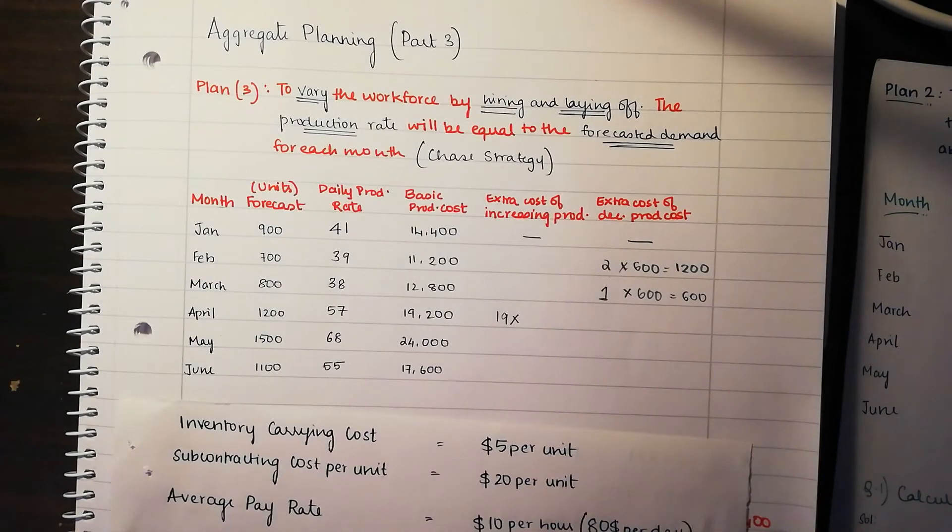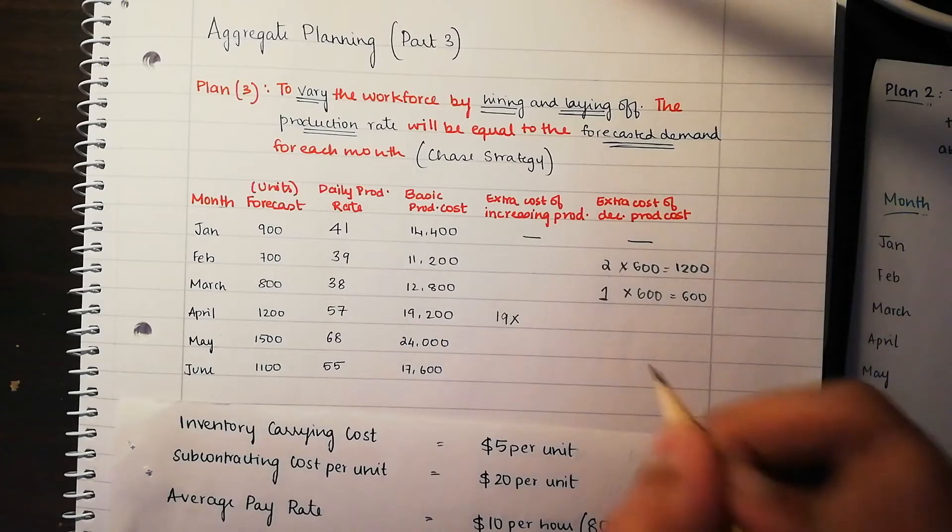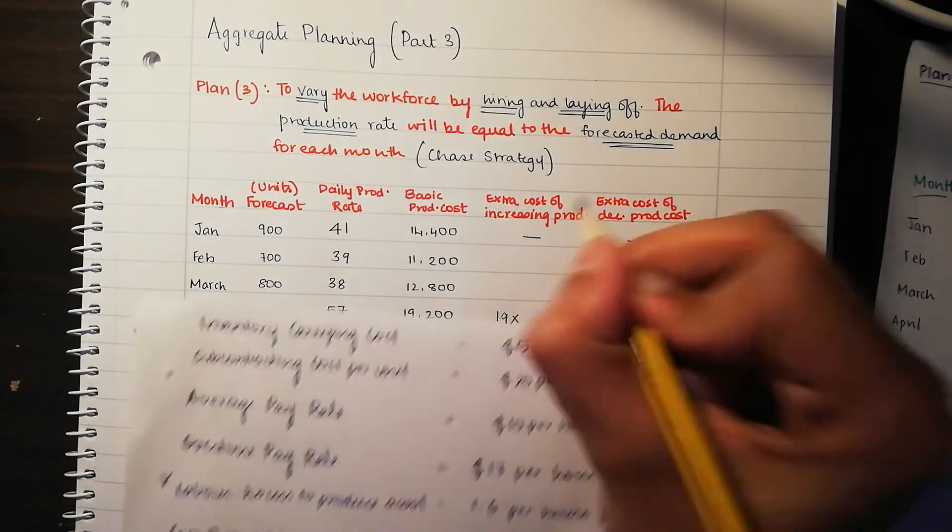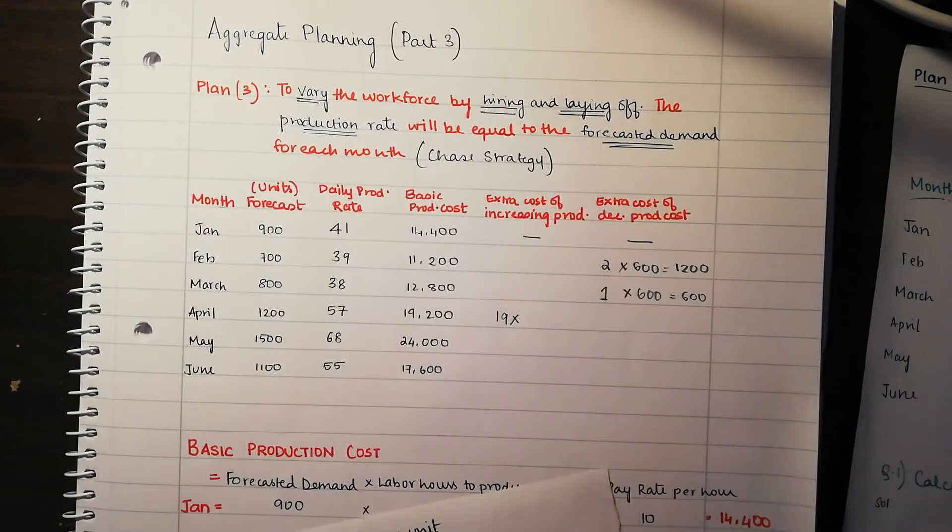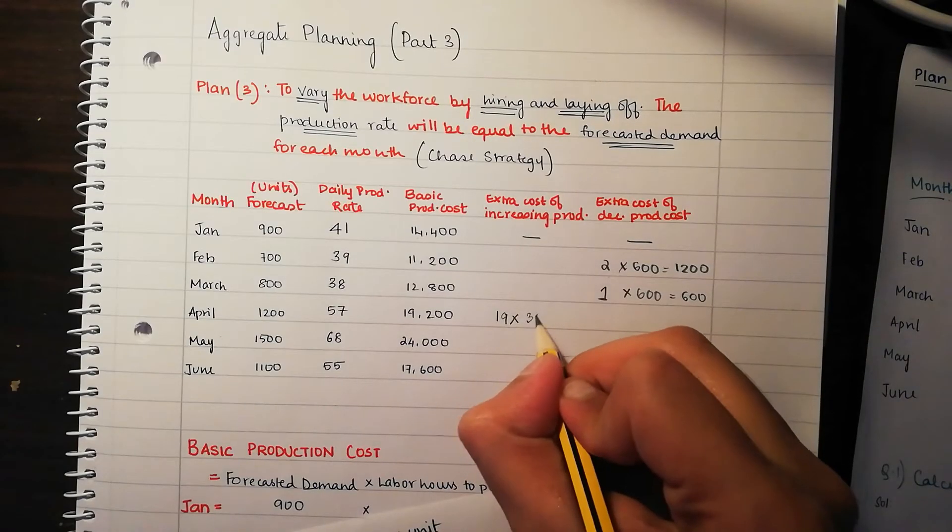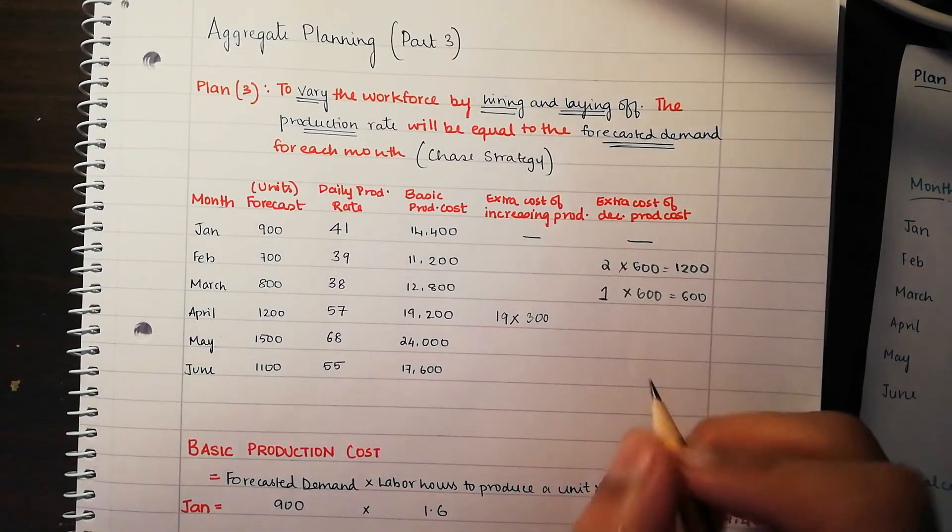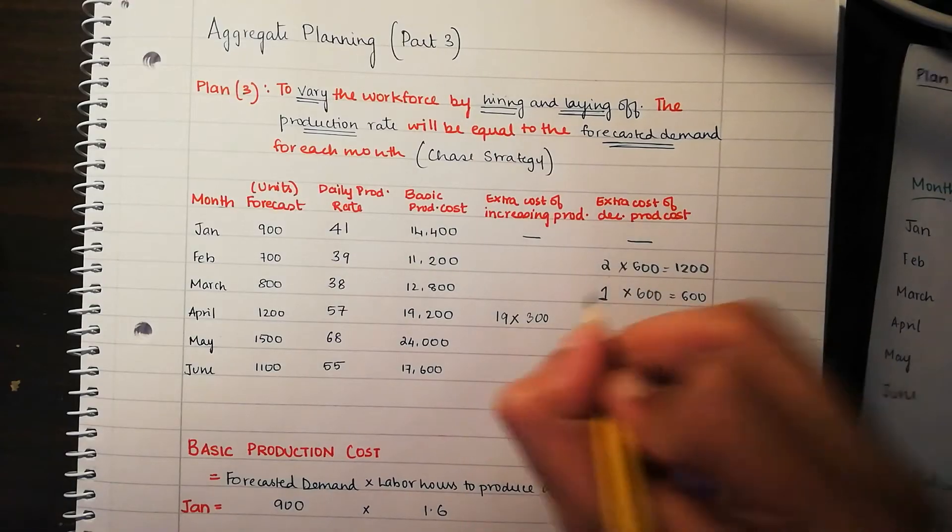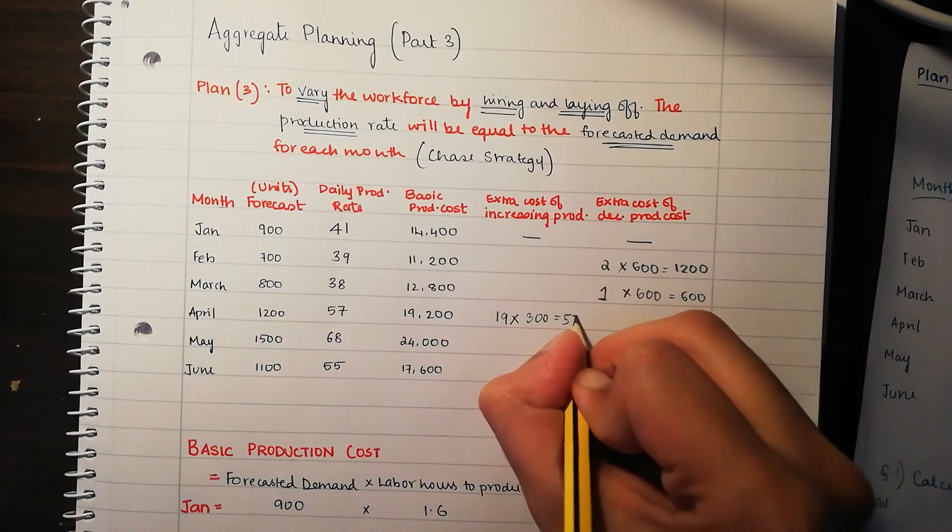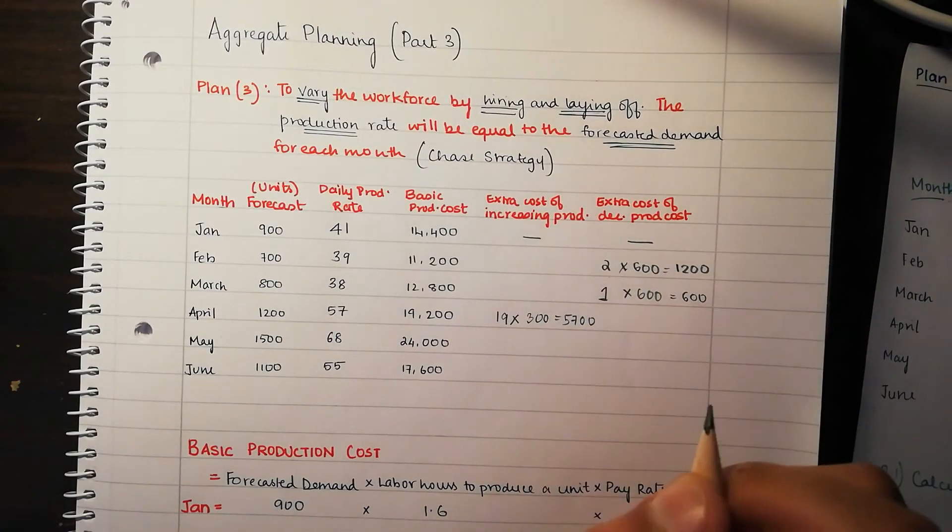You multiply this times, you don't take 600. No, we take 300. Why? Because this states that it's cost of increasing daily production rates. So since we're increasing the production, the cost to increase the production unit by unit is going to be 19 multiplied by 300. 19 multiplied by 300 is going to be 5,700.